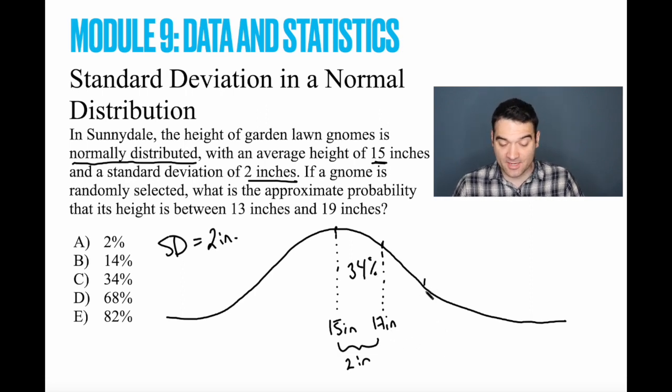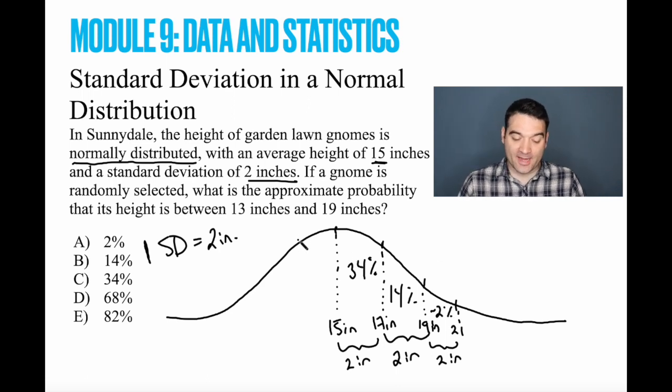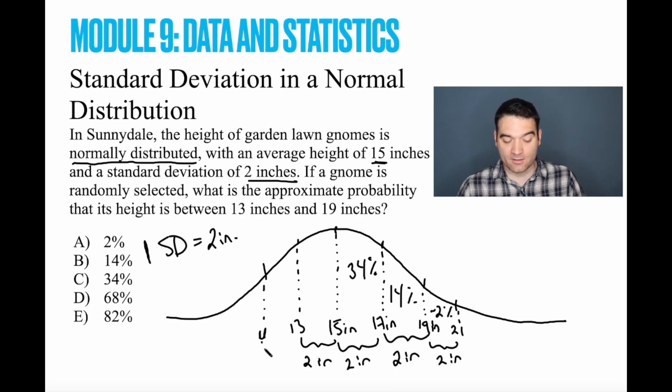1 standard deviation above that is going to be 19 inches. That's 1 standard deviation or 2 inches. When they say the standard deviation is 2 inches, they're saying 1 standard deviation, right? 1 unit of standard deviation is 2 inches up. So that's 14% right there. 2 inches above that is going to be 21. And as we know, that's going to be about 2%. All right? And then we can do the same thing on the way down. That's going to be 13, because that's 2 below there. 2 inches. That's going to be 11. 11 right there. That's 2 inches. And that's going to be 9. And there's 2 inches below that. And we can fill in these. 34%, 14%, and 2%.